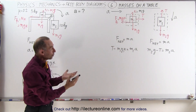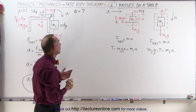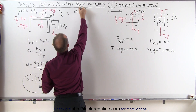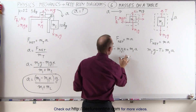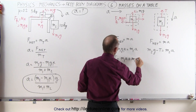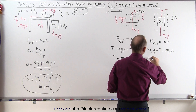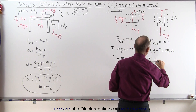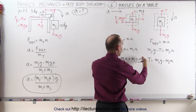Now we have those two equations with two unknowns: the tension and the acceleration. We want to get rid of the tension because we're looking for the acceleration. Solving for the tension from the first equation, we get tension equals m1a plus m1g·mu. And rearranging the second equation, we get T equals m2g minus m2a.